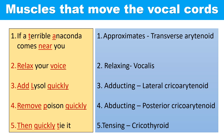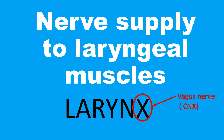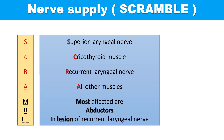Regarding nerve supply: 'S' is for the superior laryngeal nerve, which supplies the cricothyroid muscle. 'R' is for the recurrent laryngeal nerve, which supplies all other muscles. The remaining letters of the mnemonic refer to Semon's law, which states that if the recurrent laryngeal nerve is only partially damaged, the abductors are affected more than the adductors.